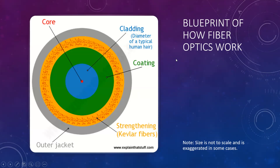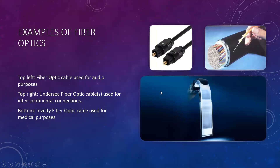Here is a blueprint of how fiber optics work: we have the core in the center, surrounded by the cladding, surrounded by the coating. In the case of undersea fiber, there are also Kevlar fibers to provide structural security and an outer jacket to prevent intrusion from outside forces. Note that the diagram is not to scale — the coating would almost never be as large as shown here; it is usually a thin coat applied to each individual core and cladding.